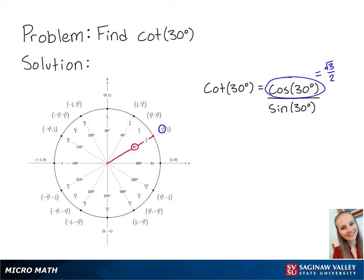Sine correlates to the y-coordinate on the unit circle. So sine of 30 degrees is equal to 1 half.